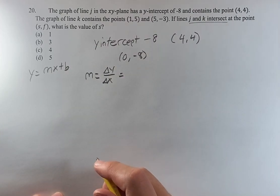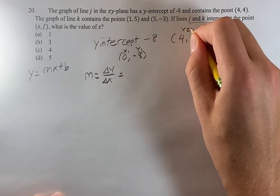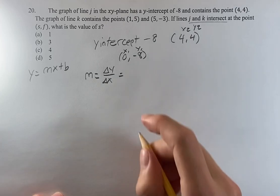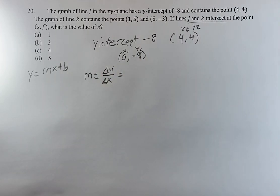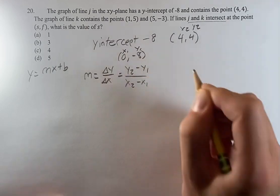Delta y over delta x. We set this one to x1, y1, x2, y2, just to get our variables in check. We have y2 minus y1 over x2 minus x1.